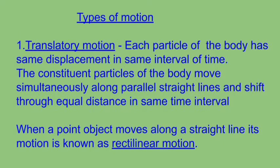Let us now talk about the types of motion. One type is translatory motion. A body is said to have translatory motion if each particle of the body has the same displacement in the same interval of time. That is, the constituent particles of the body move simultaneously along parallel straight lines and shift through equal distances in the same time interval. When a point object moves along a straight line, its motion is known as rectilinear motion.